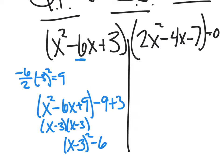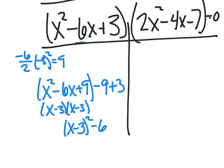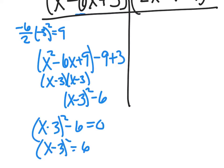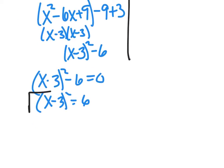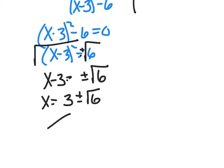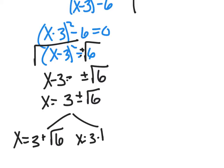That's one of my factors. I set it equal to zero: (x - 3)² - 6 = 0. Add the 6 over, take the square root — don't forget the plus or minus — so I get x - 3 = ±√6. I can't simplify √6, so I bring the 3 over. I have two solutions: x = 3 + √6 and x = 3 - √6.